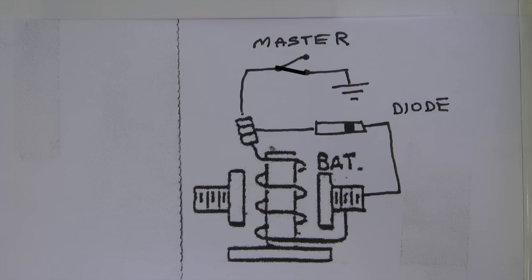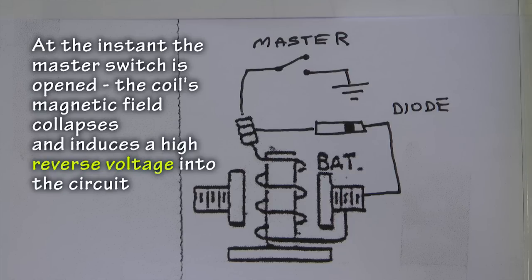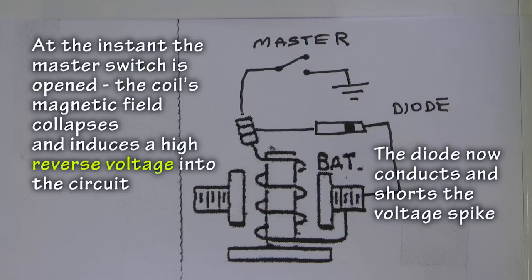Now, when we flip our master switch off, the voltage is removed from the coil, and within a split moment the coil's magnetism collapses and induces a high reverse voltage into the circuit. But now, the diode poses a short circuit to this reverse voltage and safely dissipates that electrical energy so that the switch never sees it. There will be no spark or arc.